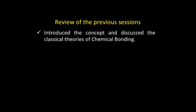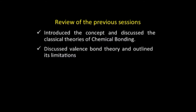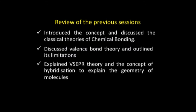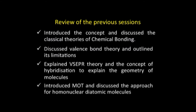With this brief outline let us move further and see what we have done so far. We started by introducing the concept of chemical bonding and discussed classical theories — the Causal's theory, Lewis theory, and things like that. Thereafter we moved on to a quantum mechanical approach to chemical bonding, that is valence bond theory, discussed it in detail and outlined its limitations. We also took up VSEPR theory and the concept of hybridization to explain the geometry of molecules. Thereafter we introduced molecular orbital theory and discussed the approach for homonuclear diatomic molecules.